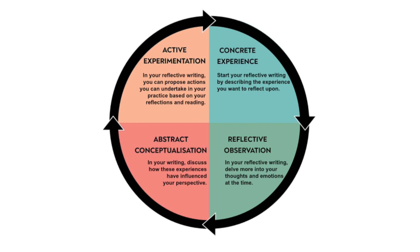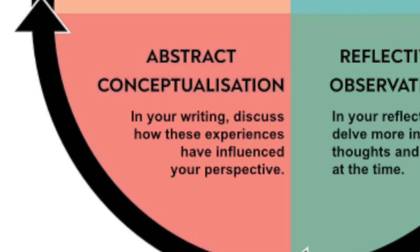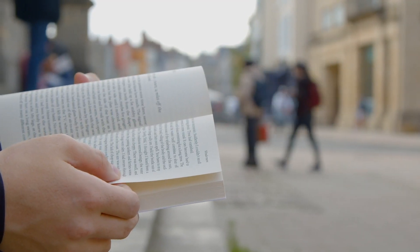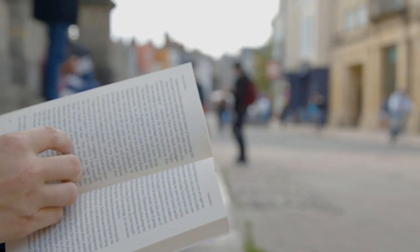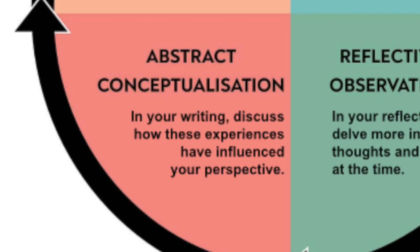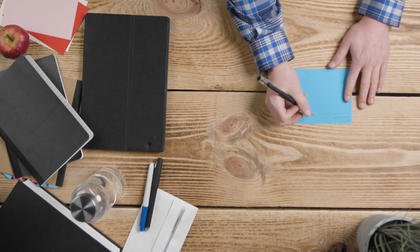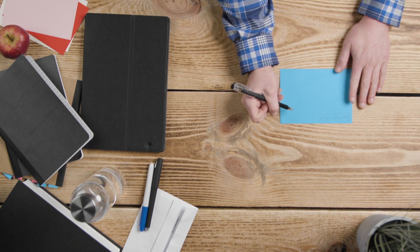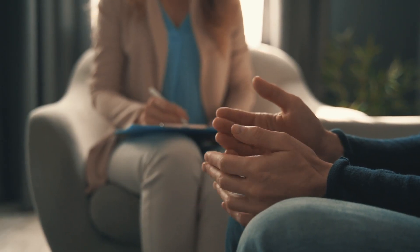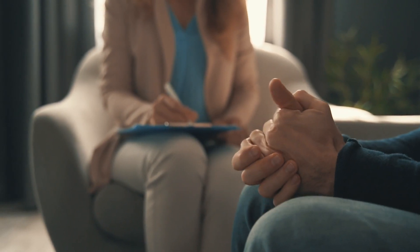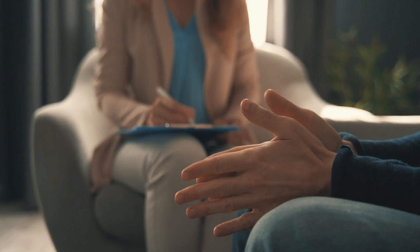During the abstract conceptualisation stage, you should seek to connect your experiences to relevant social work theories and concepts, and think about how you can apply what you've learned in the future. In your writing, discuss how these experiences have influenced your perspective. Make sure to share any new ideas or insights you've gained based on your experiences and reading. For example, you might realise that active listening is crucial in social work, so you could draw on reading and research to demonstrate how you can make a conscious effort to improve this skill.